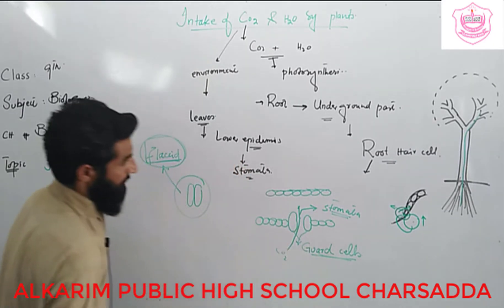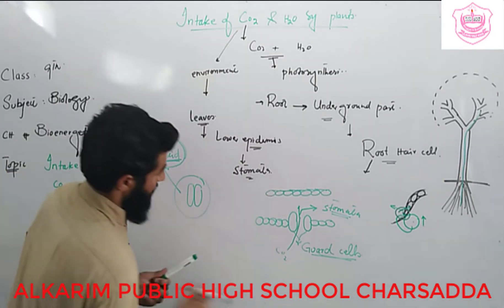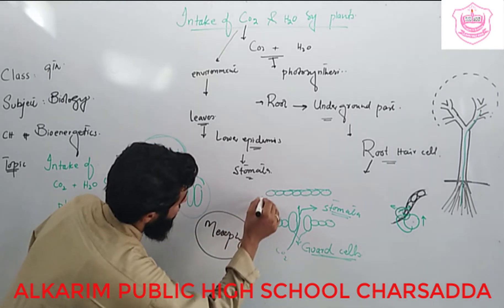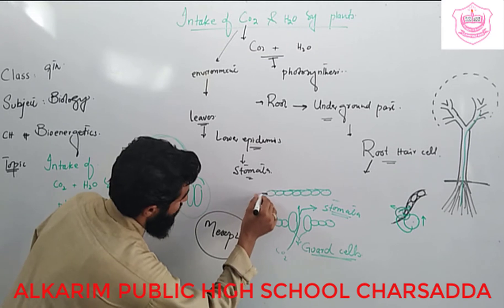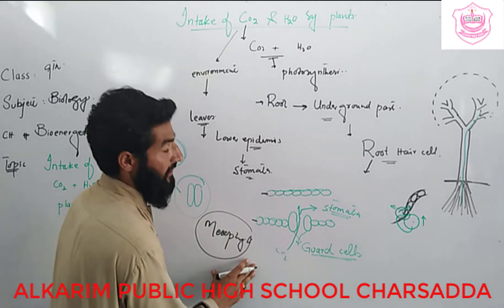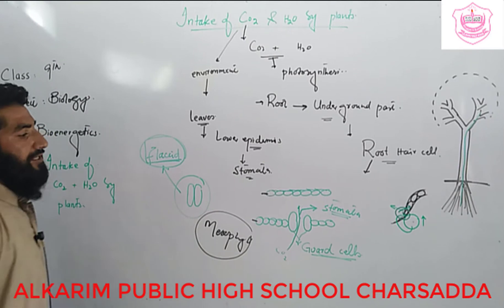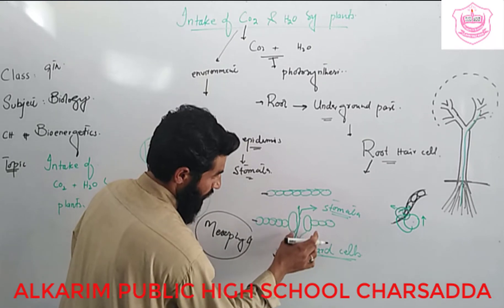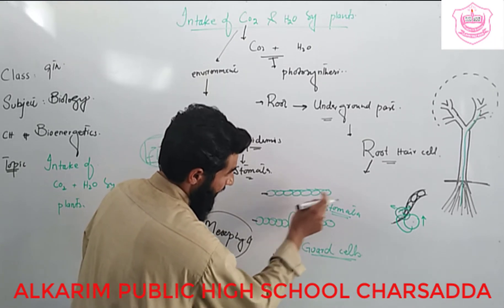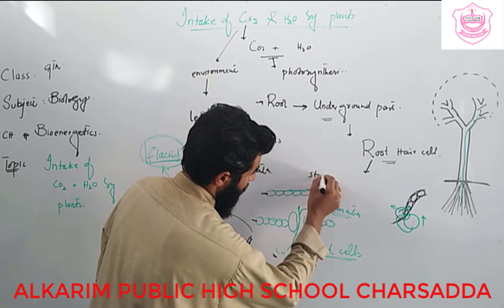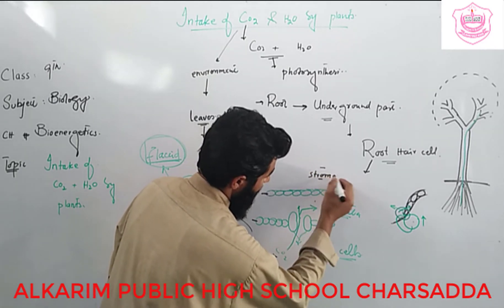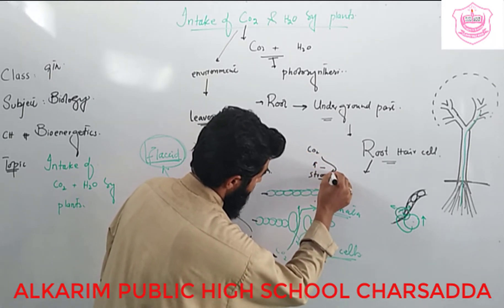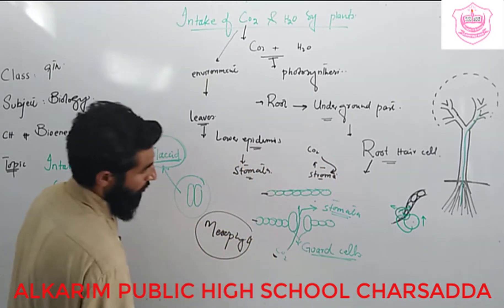When the stomata are open, CO2 diffuses from the environment toward the mesophyll cells. Mesophyll cells are the cells present between the upper and lower epidermis, also known as photosynthetic cells where photosynthesis occurs — they contain chloroplasts. When CO2 diffuses from the environment toward the mesophyll cells, it combines with the wet surface of the mesophyll cell and diffuses into the stroma of the chloroplast. Inside the stroma, CO2 combines with water to produce glucose.